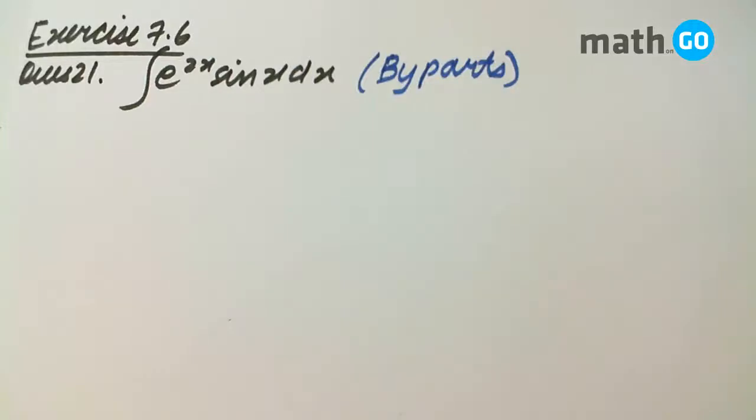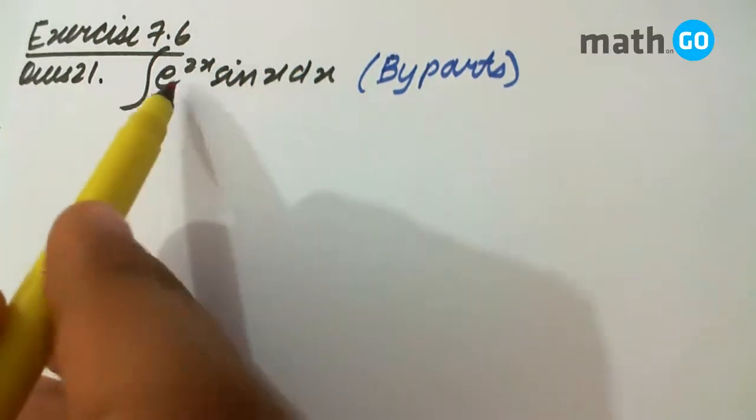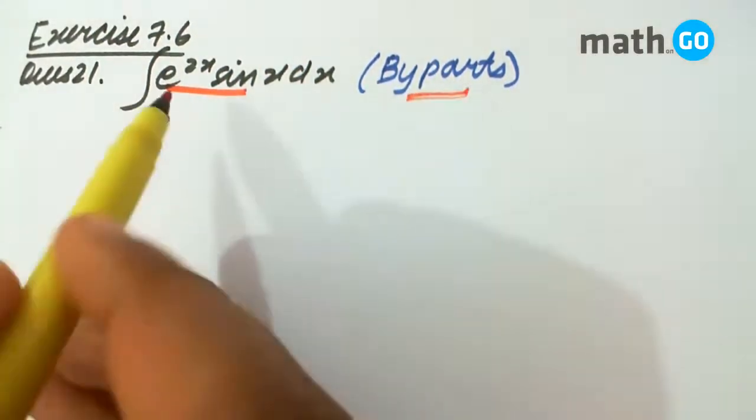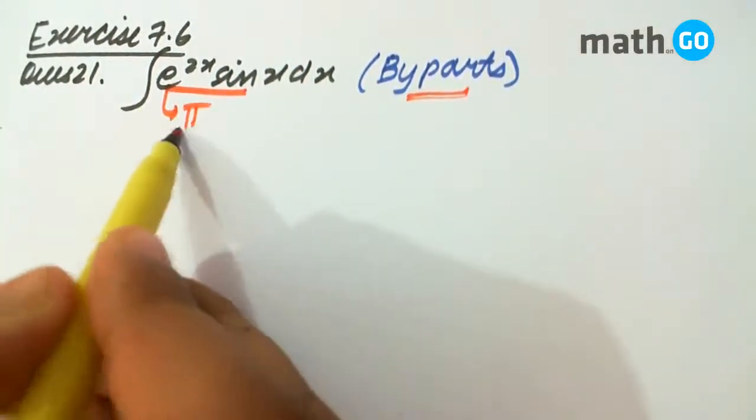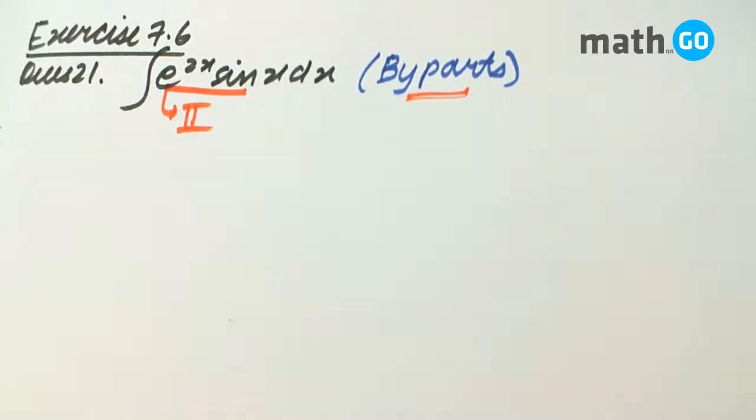Exercise 7.6, question number 21. We can conclude that it has to be done by integration by parts, and this has to be taken as the second function according to the ILATE rule.